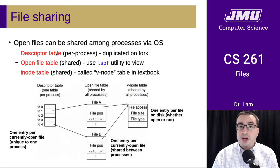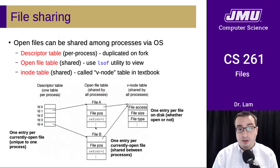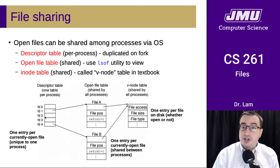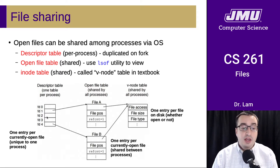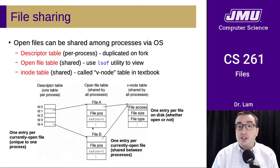All of those file pointers are going to be duplicated when that process forks. So the child process will get a copy of those pointers to the open file — they will essentially be reading and writing from the same file. Even though the tables will begin to diverge after the fork happens, at the point of the fork they will be referring to the same files, and changes to those files will be visible to the other processes.